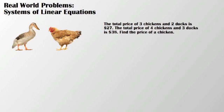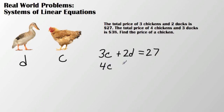Alright, so this one's pretty straightforward. Some people like to use x and y. I'm fine using d for duck and c for chicken if it helps to set up the problem. So the total price of three chickens and two ducks is $27. The total price of four chickens and three ducks is $38. Find the price of a chicken. Alright, so now that I have my problem set up.